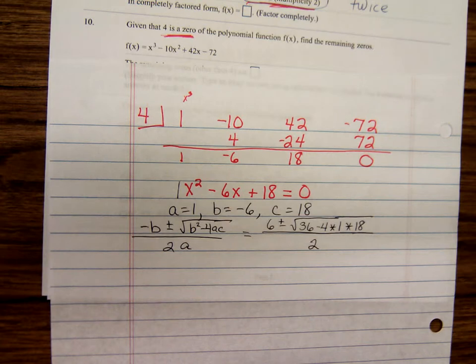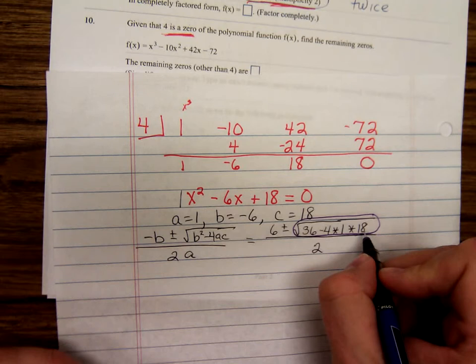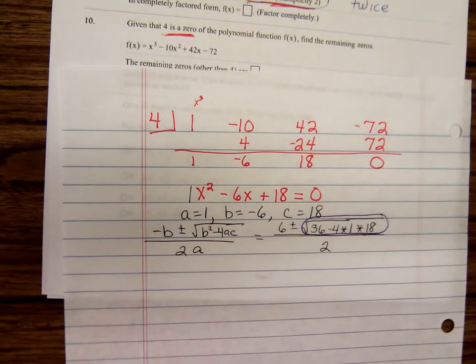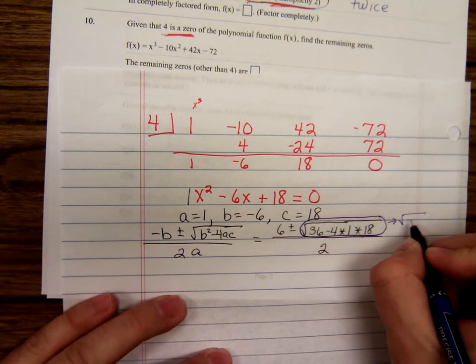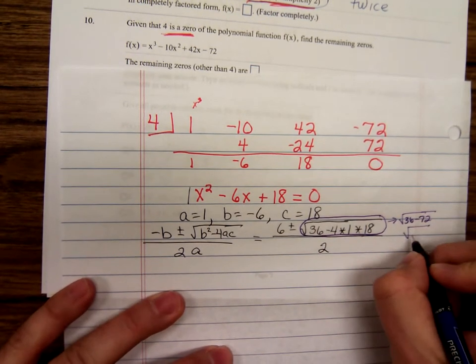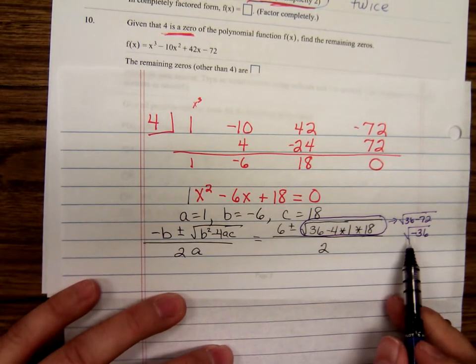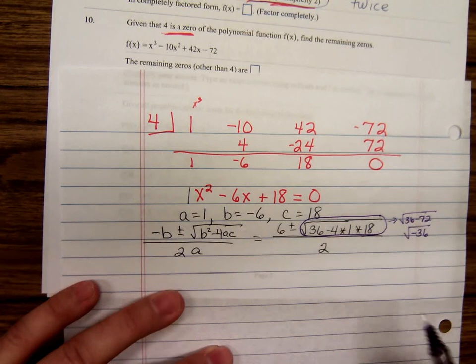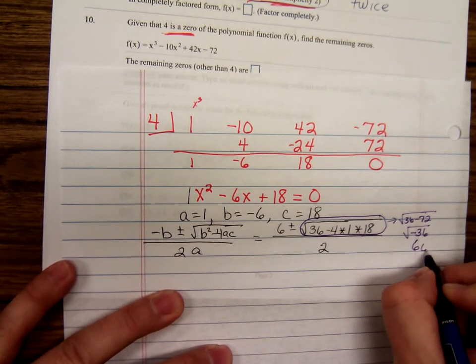And simplify under the square root. So we have underneath here thirty-six minus seventy-two, which would be negative thirty-six. It's been a while since we've simplified the square root of a negative, the square root of negative 36, y'all remember, that is 6i.